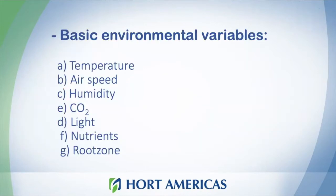There are a lot of variables inside of a growing system, but here I have a list of the most important variables: temperature, airspeed, humidity, CO2, light, nutrients, and root zone.